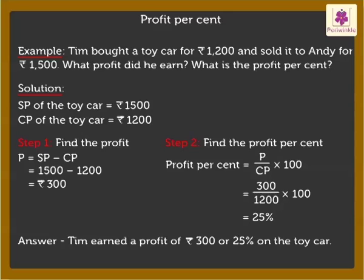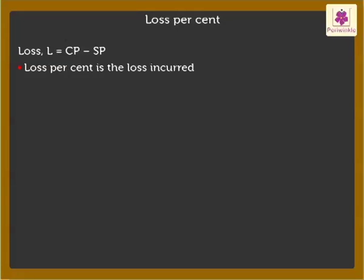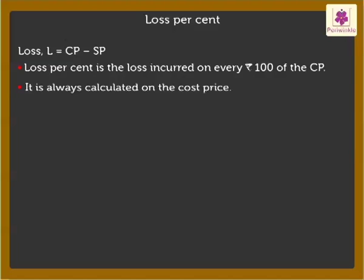Now, let's see how to find the loss percent. We know loss is equal to cost price minus selling price. Loss percent is the loss incurred on every 100 rupees of the cost price. Hence, it is always calculated on the cost price of the article. Thus, loss percent is equal to loss upon cost price into 100.